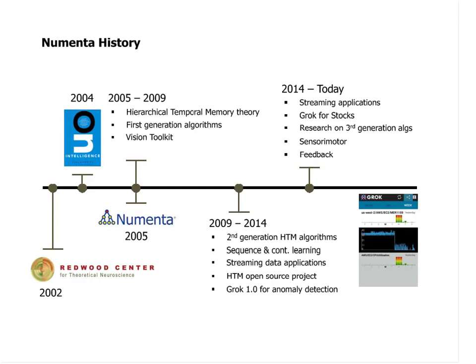In 2005 he formed Numenta as a for-profit company, and the Redwood Center went to UC Berkeley as part of the neuroscience department. Within Numenta, there have been basically three different generations of our work. Between 2005 and 2009 we worked on the first generation — Hierarchical Temporal Memory — primarily in computer vision. Between 2009 and 2014, we worked on a second generation focused on sequences and continuous learning, released our code as open source on GitHub, and focused on anomaly detection. More recently we've started a brand new research direction on sensory-motor inference and the role of feedback.